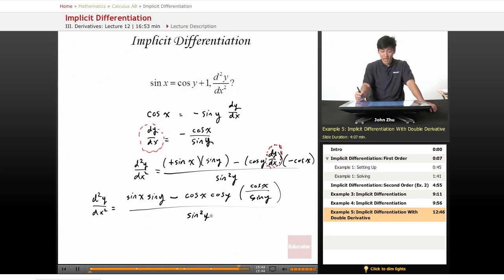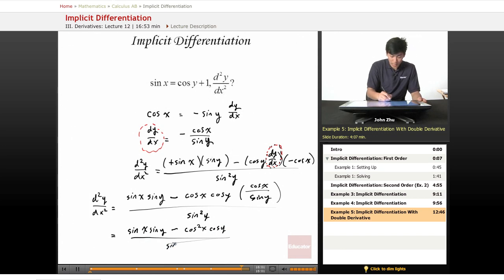And we can rewrite this a little bit, simplifying it, sine of x times sine of y minus cosine squared x times cosine of y, all over sine cubed y.